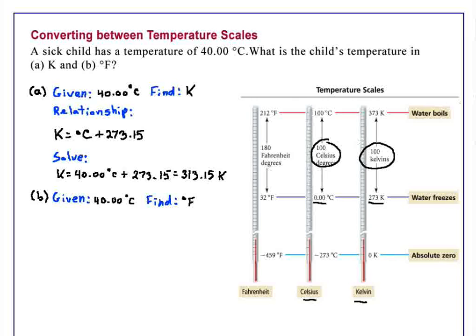Again, we need a relationship. So we'll go to our scale. And in this case, we notice that the degree Fahrenheit scale has 180 degrees in the same span that we have 100 degrees Celsius.